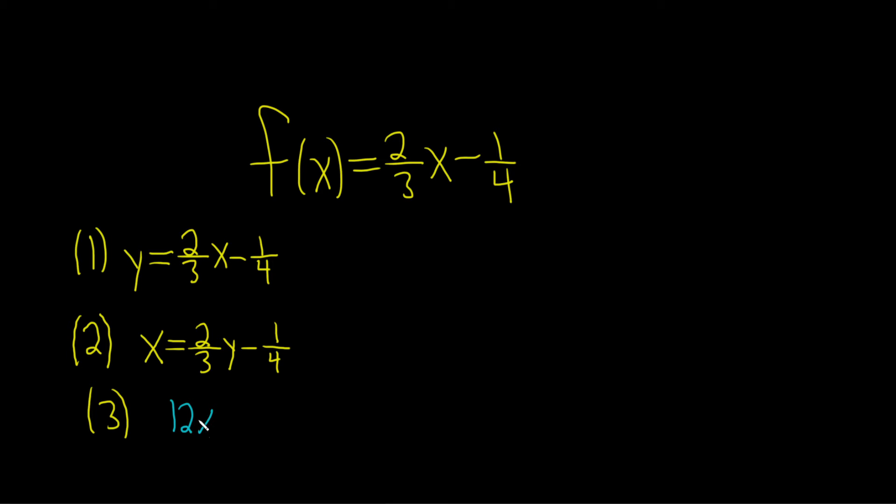Let's multiply the left-hand side by 12 and the right-hand side by 12 as well. So 12 times the quantity 2/3 y minus 1/4.